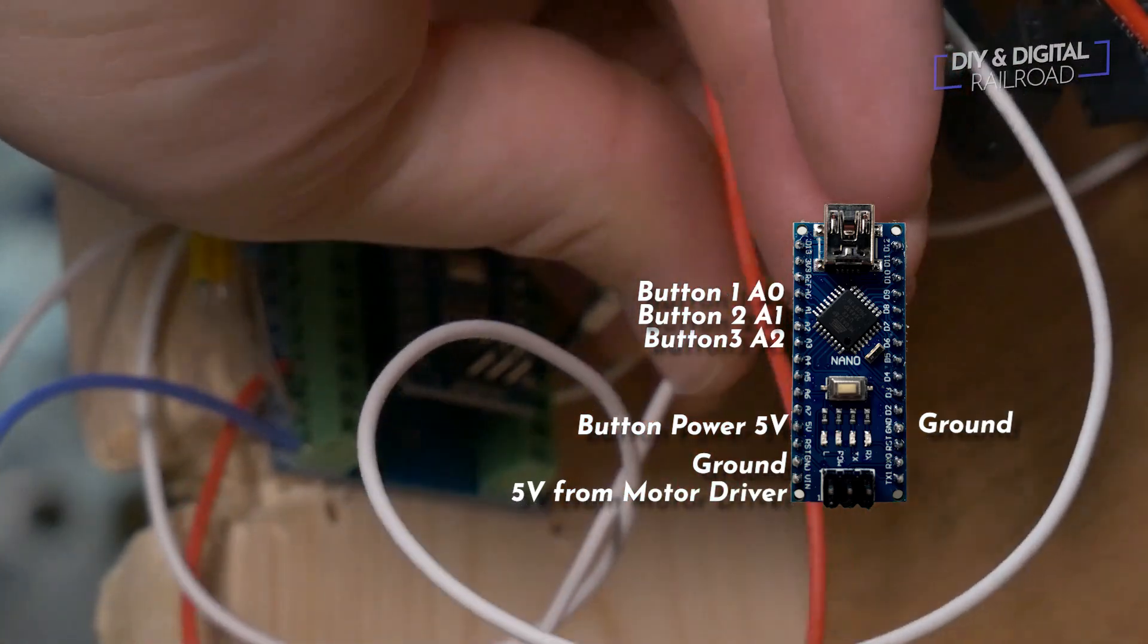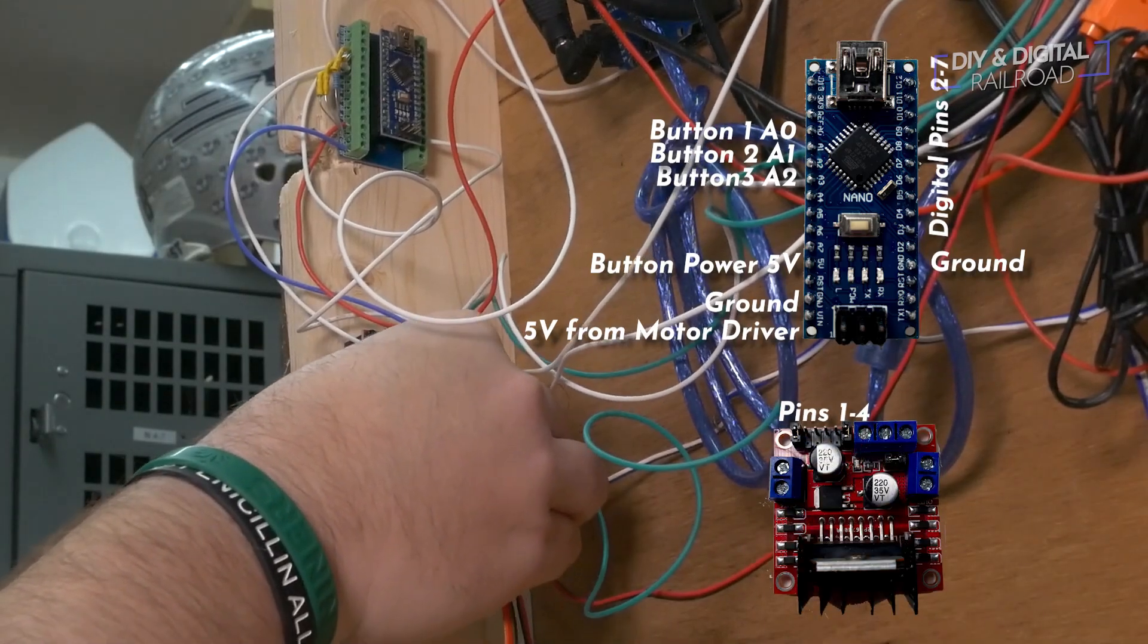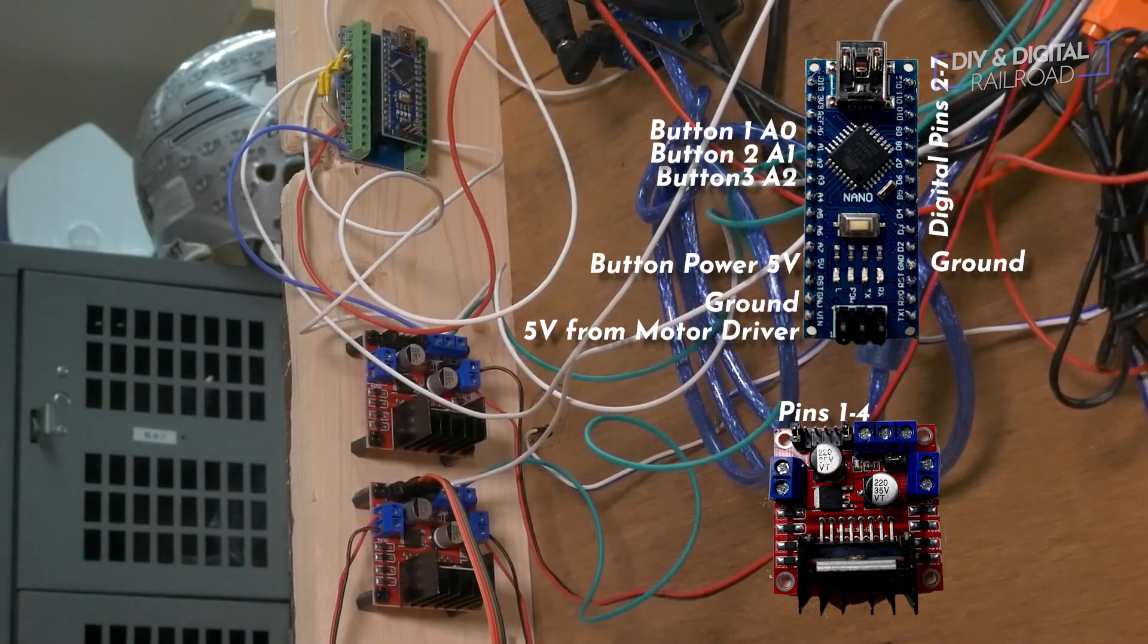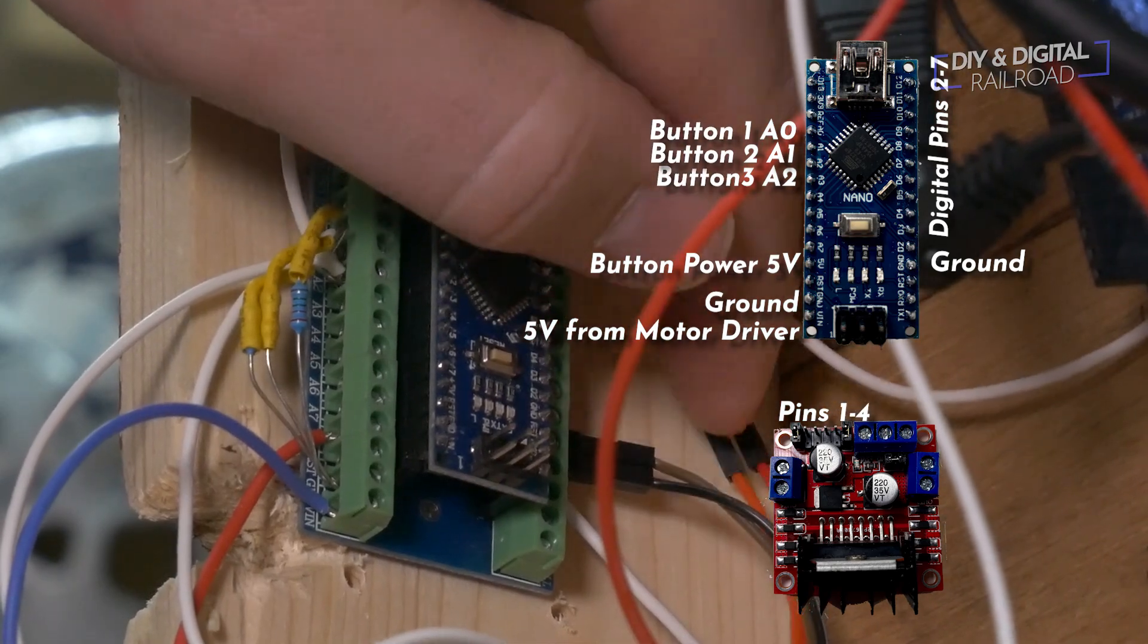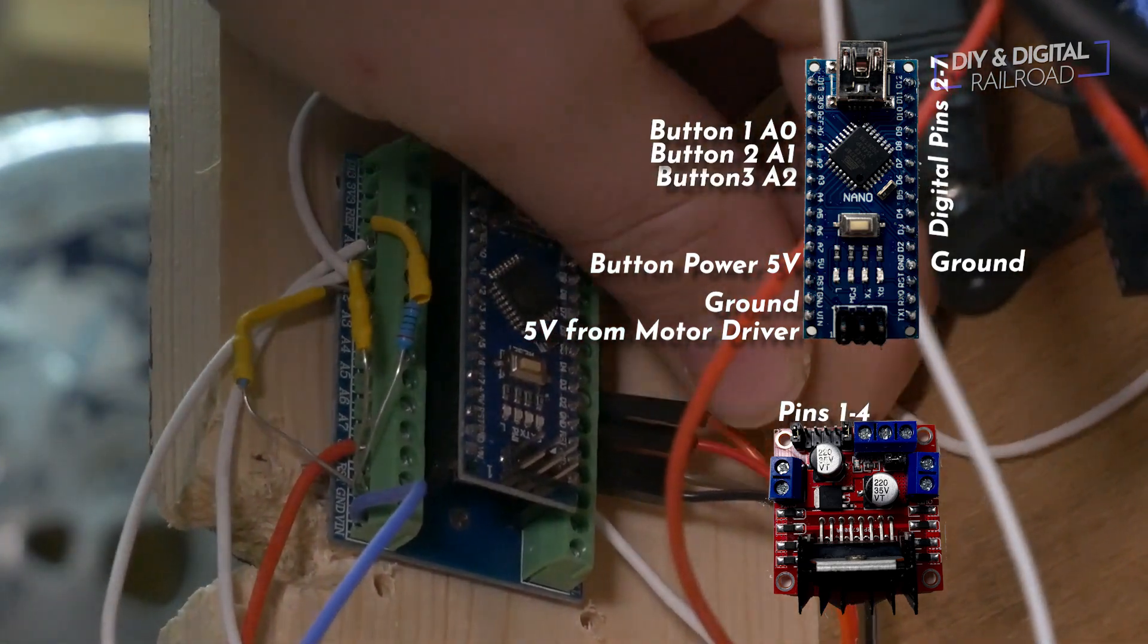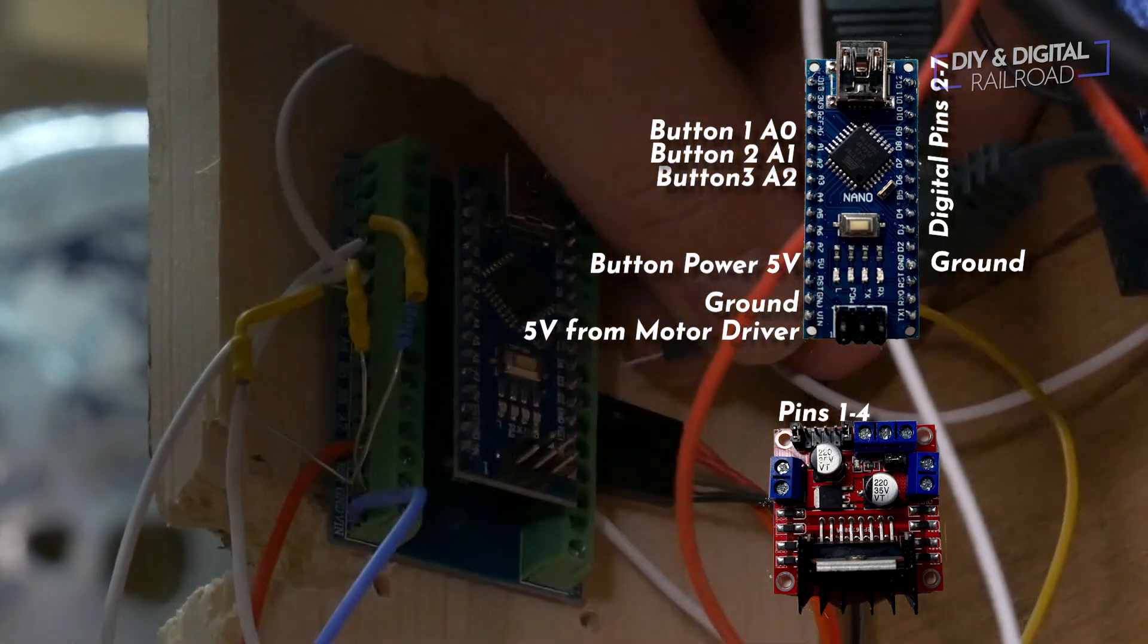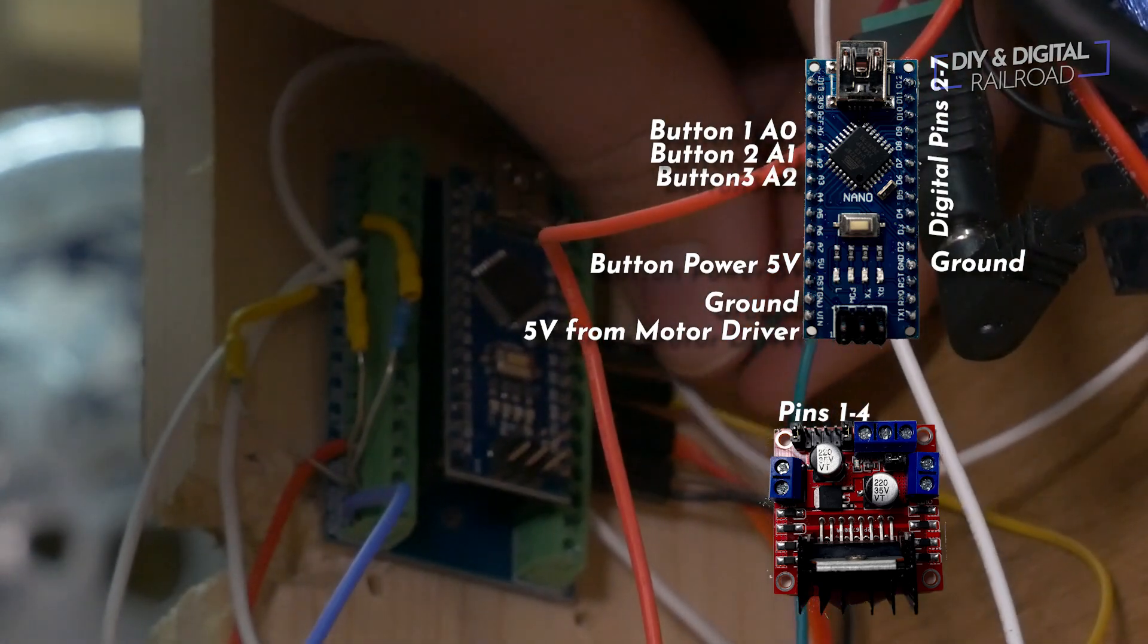Next it's time to connect our control pins. From the motor driver that is controlling two of the turnouts you'll take pins 1 and 2 and connect them on the Arduino to digital pins 2 and 3. From control pins 3 and 4 you'll connect those on the Arduino to digital pins 4 and 5. From the second motor shield that is controlling a single turnout you'll take control pins 1 and 2 and connect them to digital pins 6 and 7 on the Arduino.